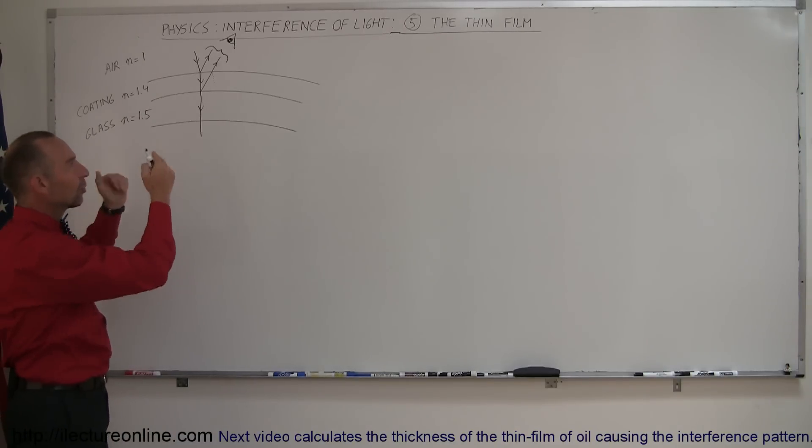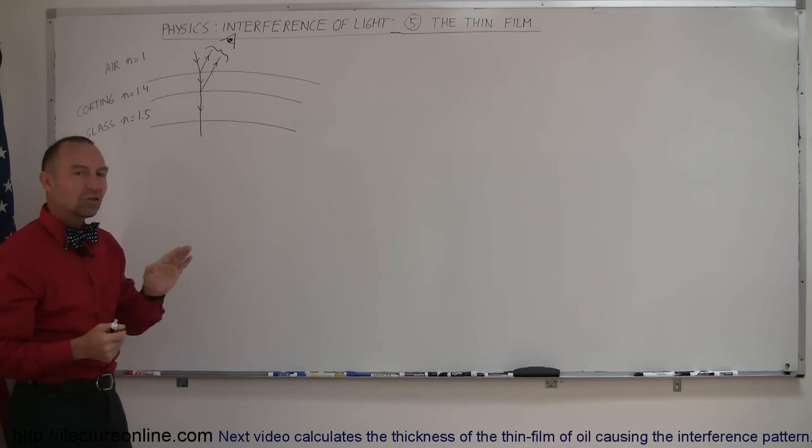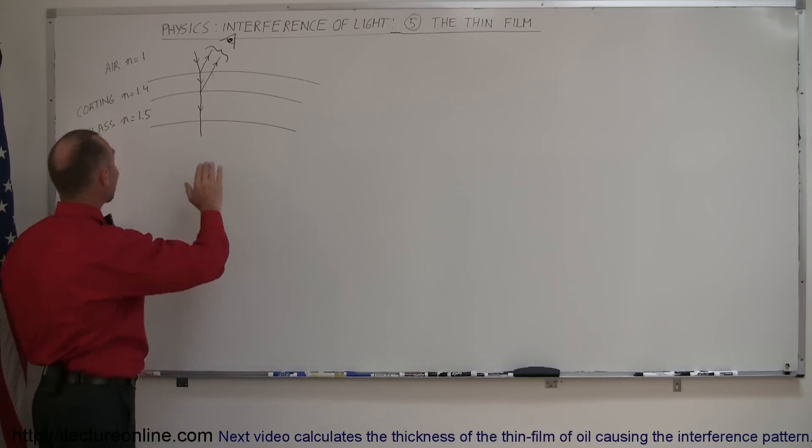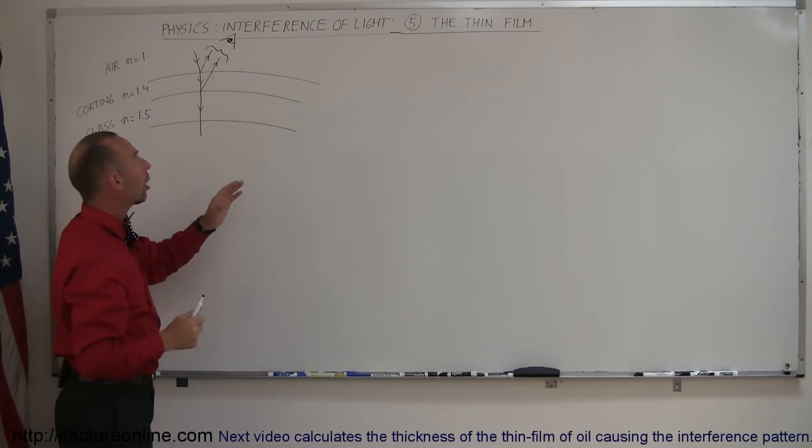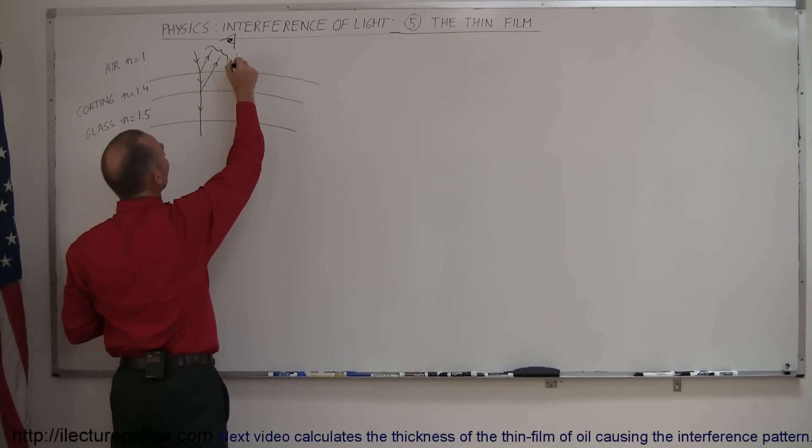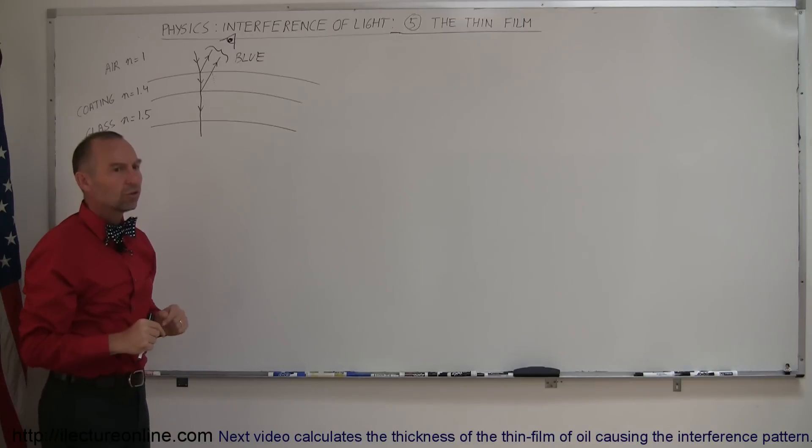And I go, wow, that's exactly what's going on over here. On the windshields of cars, apparently, they put a very thin film, a very thin coating on the windshield that will cause blue light to be reflected from the windshields and the rest of the light to be transmitted through the windshield.